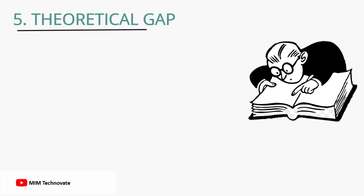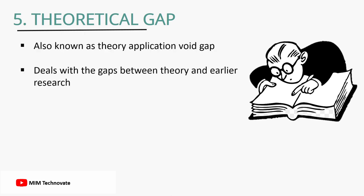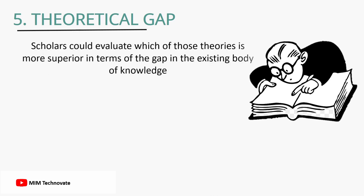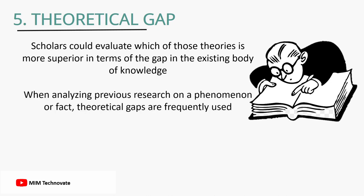Theoretical gap, known as theory-application void gap, deals with the gaps between theory and earlier research. For example, a gap conflict might exist if different theoretical models are being used to describe the same fact or phenomena, much like a methodological gap conflict. Scholars could evaluate which of those theories is more superior in terms of the gap in the existing body of knowledge. Theoretical gaps are frequently used when analyzing previous research, phenomena, or facts.